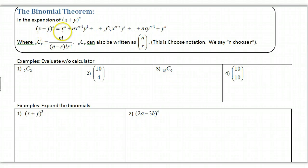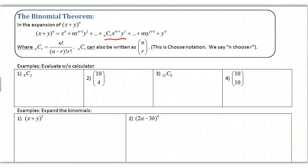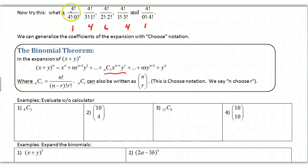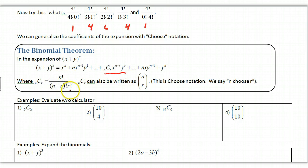(x+y)^n equals x^n plus n·x^(n-1)·y, and so on. For any general term, we use choose notation: nCr, also written C(n,r). The formula is n! divided by (n−r)!·r!. This is sometimes called 'n choose r.' The calculator notation nCr is the more modern form.